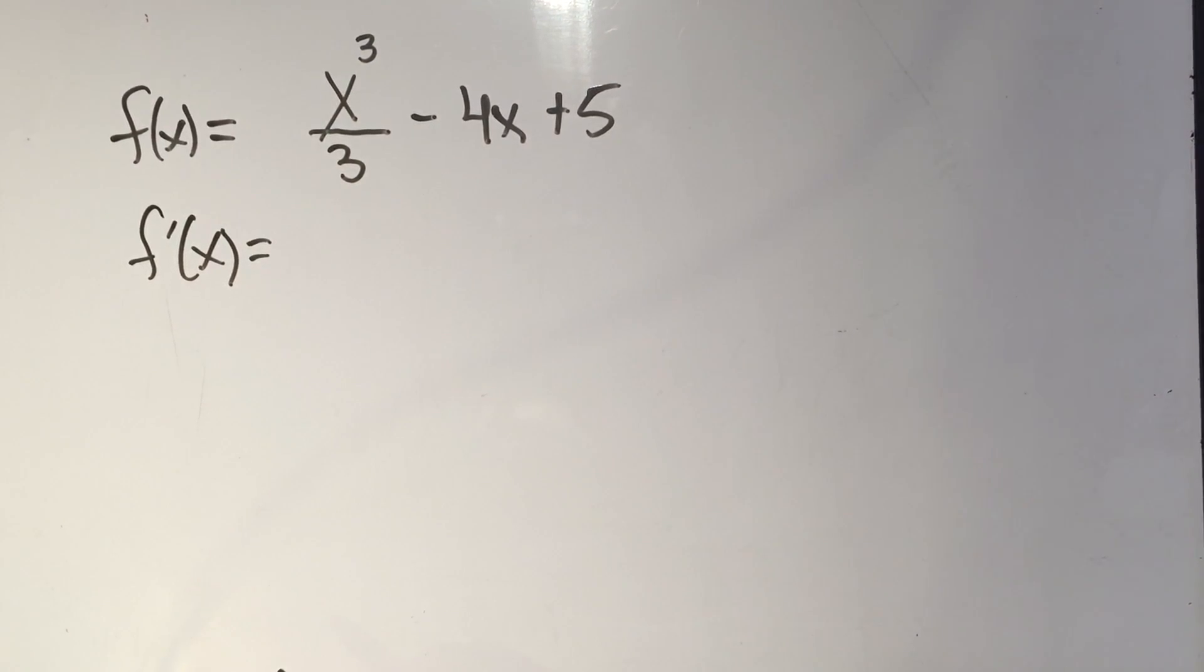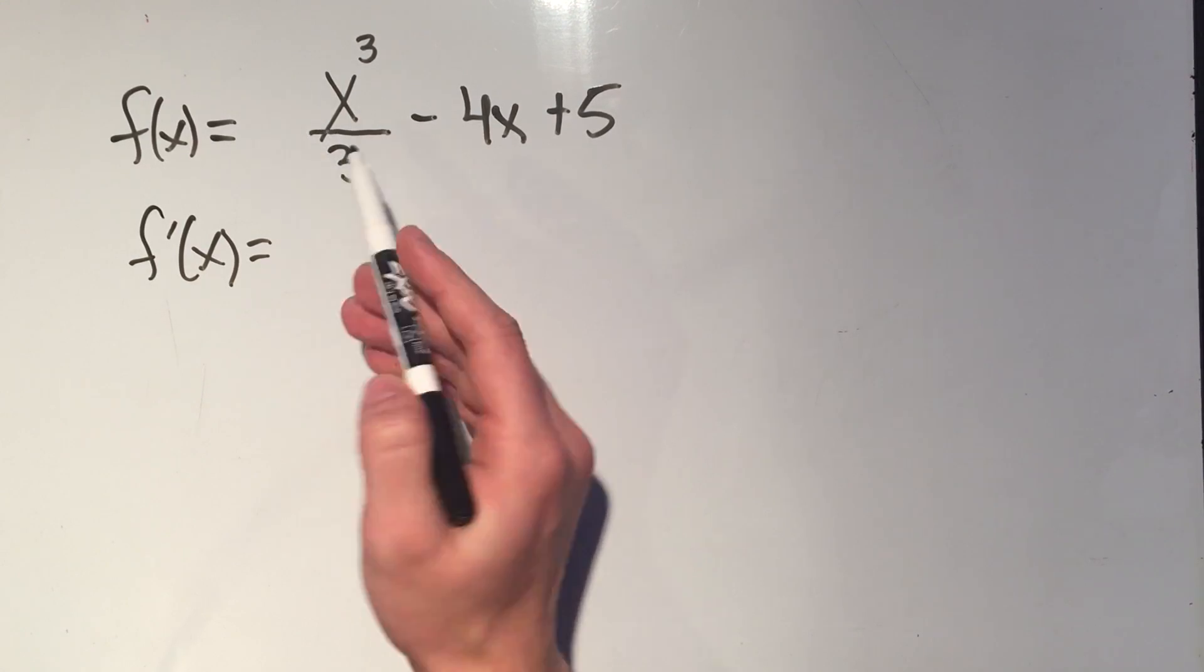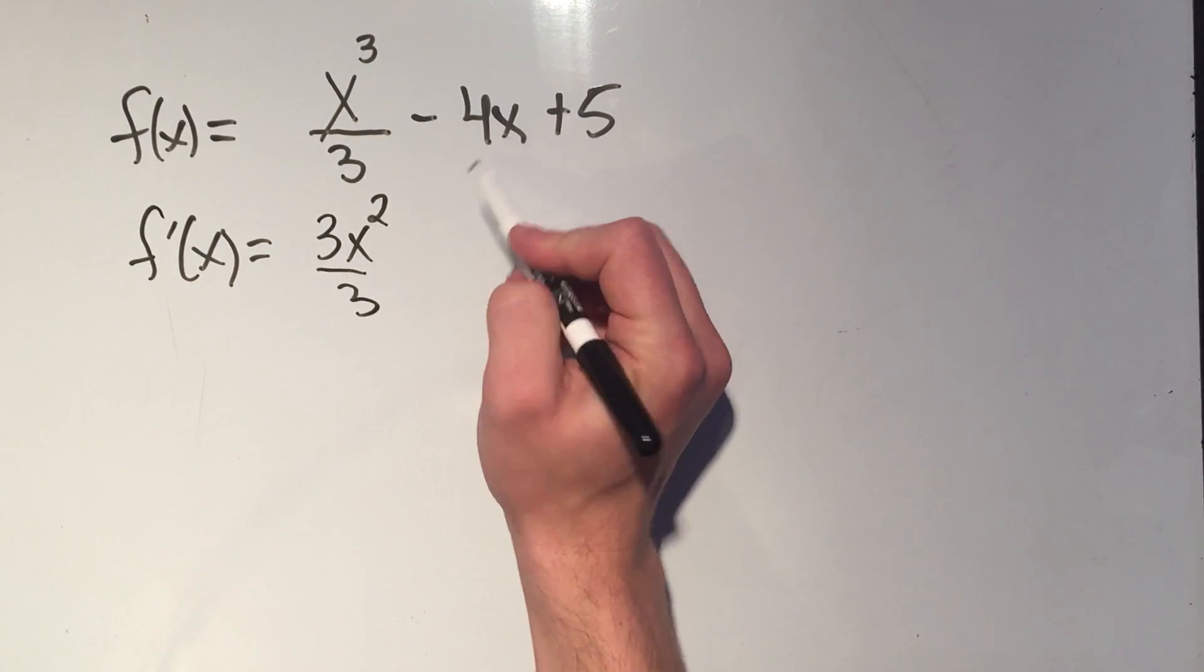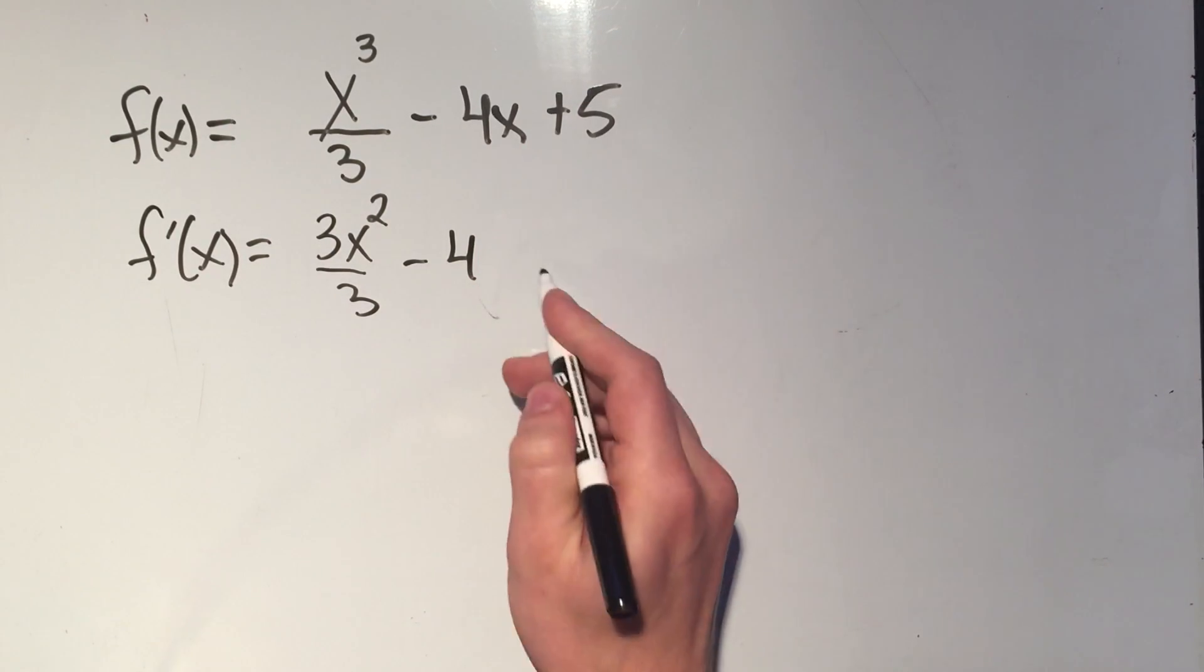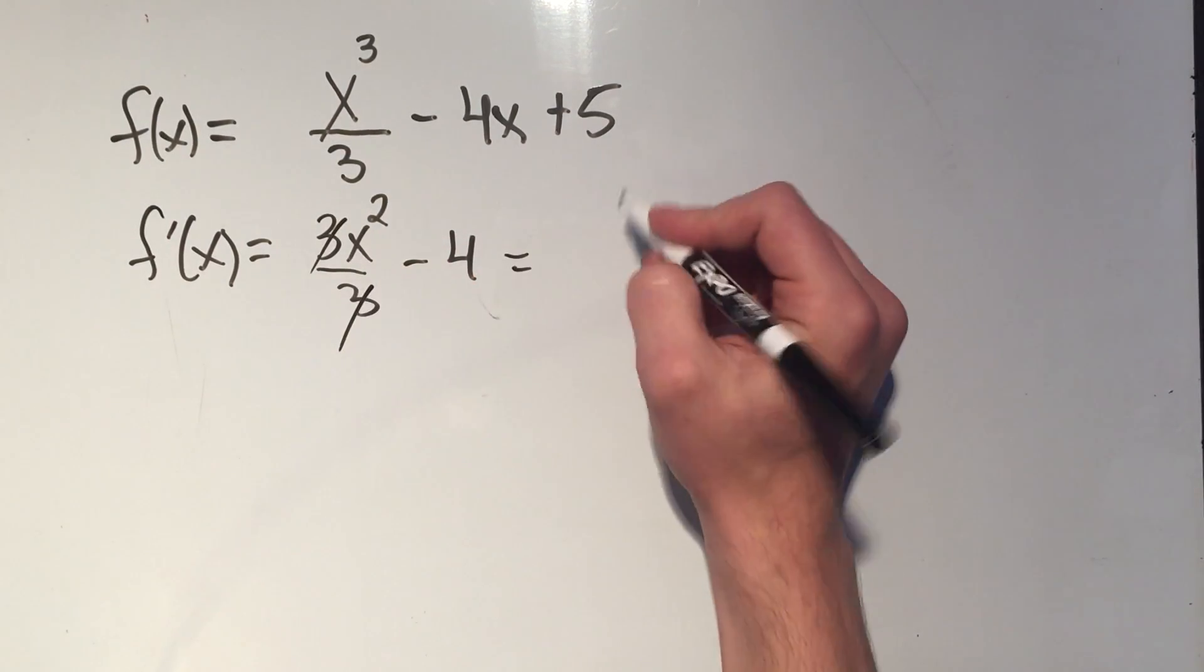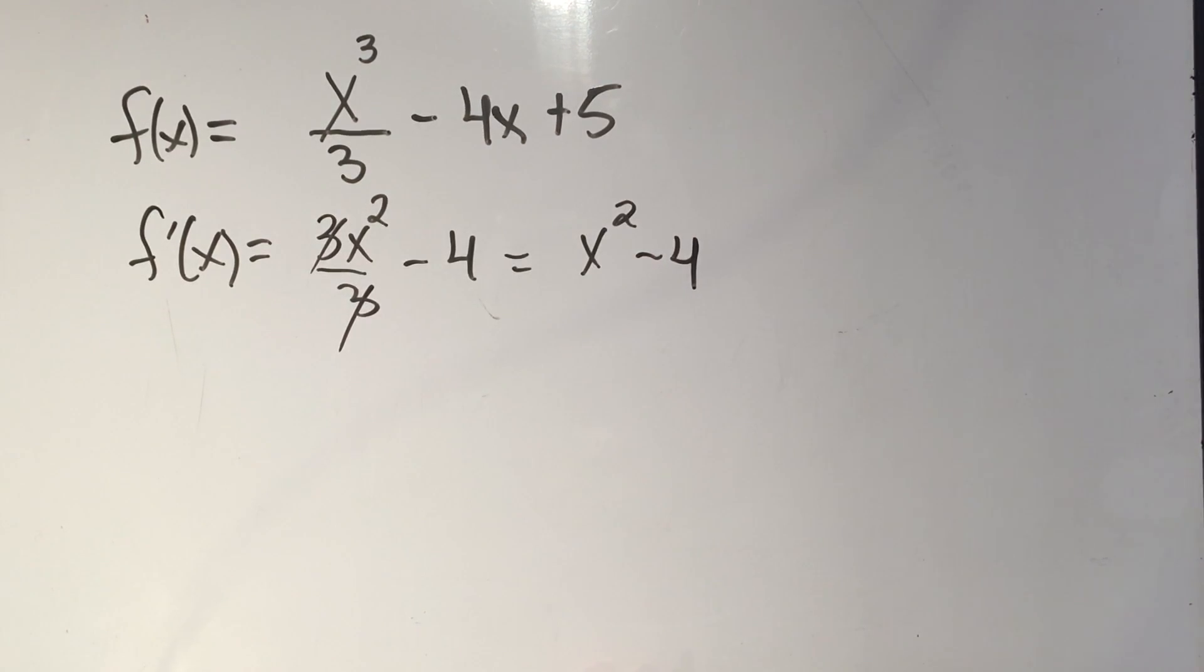I need to take the derivative. So this is just an easy power rule. I'll bring down the three, subtract one from the power. The derivative of minus four x is minus four. And the derivative of a constant is zero. And I can cancel those three over threes, and I'll get x squared minus four. That's our first derivative.